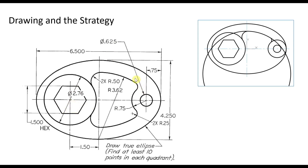I can draw the ellipse, then this circle and this circle with the given distances and diameters. I can draw the polygon. The most intricate part is this section — I know the center of this arc is here. I can draw that arc, then make fillets between the arc and this part of the circle with a radius of 0.25.